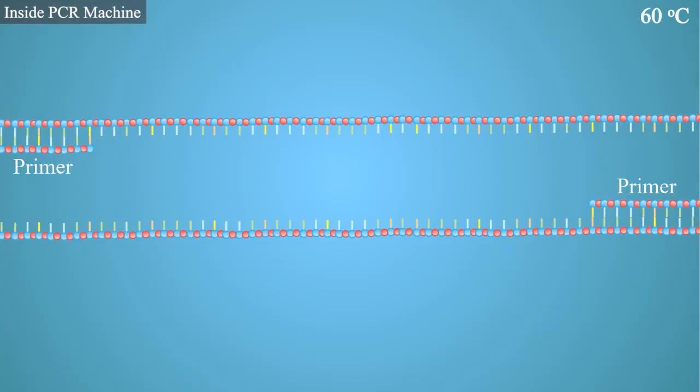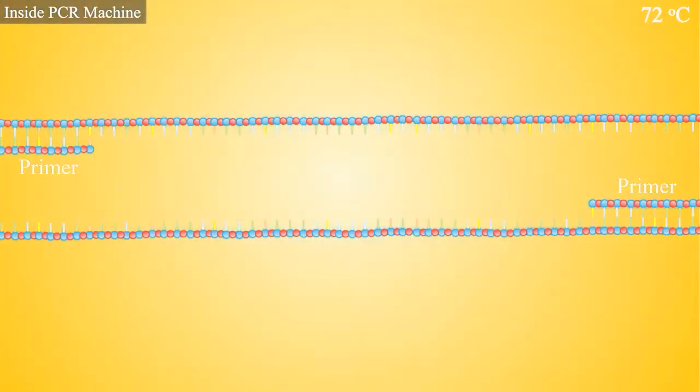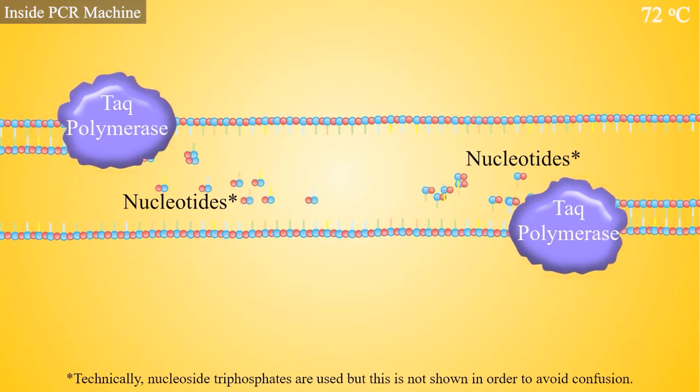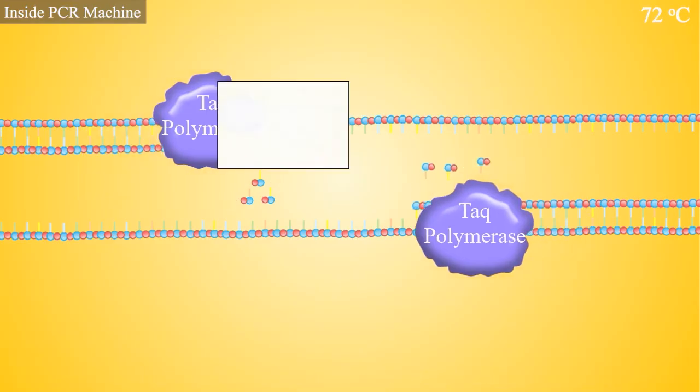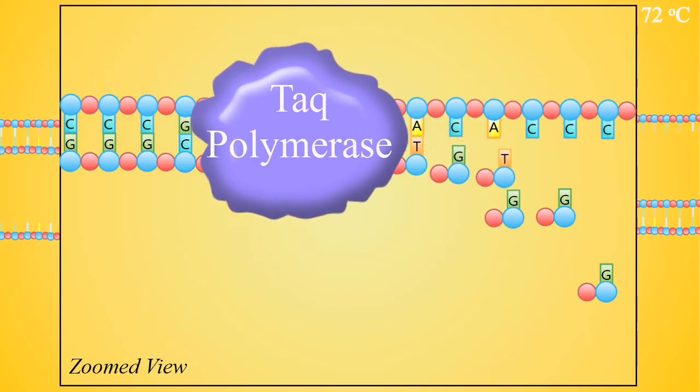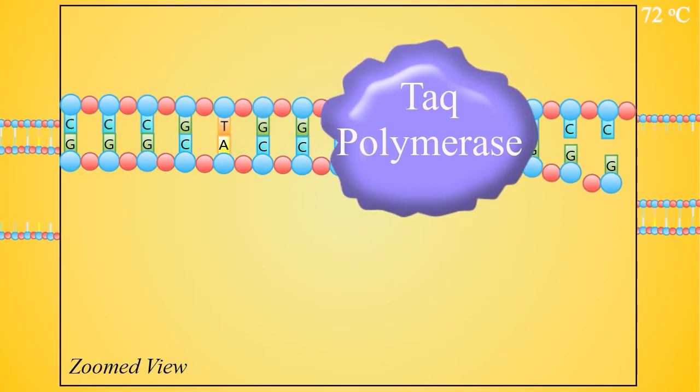Now that the primers are attached, we can use Taq polymerase and nucleotides to build new DNA strands. The PCR machine raises the temperature to the optimal temperature for Taq polymerase, so that this enzyme can get to work. Nucleotides are added following base pairing rules, just like in normal DNA replication in a cell.